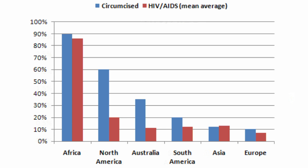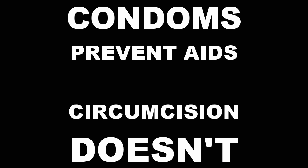It appears that there is no correlation, or maybe even an inverse correlation, to the idea that circumcision will reduce HIV infection rates. In other words, it appears it's not true. It's hard to beat a statistical analysis of over 6 billion people, compared to a small, flawed study of only just over 3,000. I hope that helps. Thank you very much.